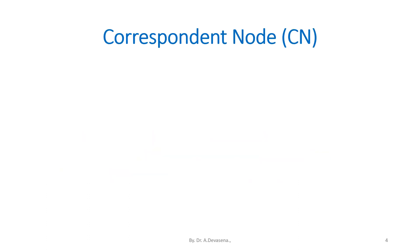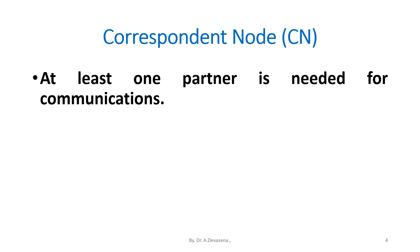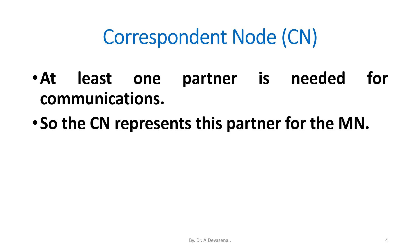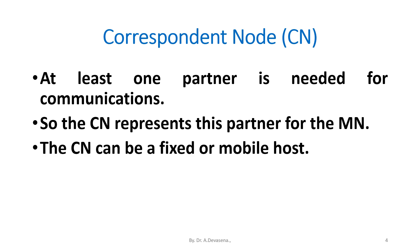Correspondent node (CN): At least one partner is needed for communications. The CN represents this partner for the MN, that is the mobile node. The CN can be a fixed or mobile host.